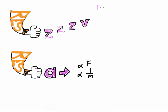Here is an example of Newton's 1st Law: an object will remain at rest or move at a constant velocity unless a resultant force acts upon it. Instead of drawing an object, I drew the letter Z — it represents the object but also indicates rest, like sleeping. Then I added V to remind me of velocity.